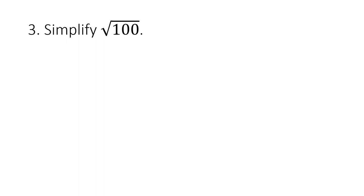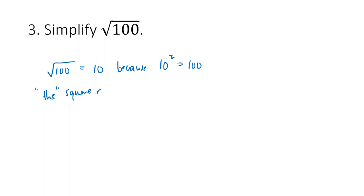Moving on to radicals: square root of 100 is 10 because 10 squared is 100. You might wonder about plus or minus, but we'll address that later. When we write just a square root symbol, we mean the principal square root, which is the positive square root.